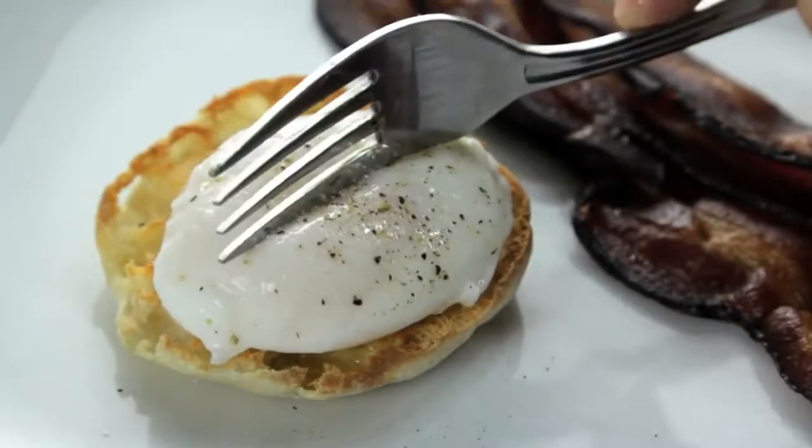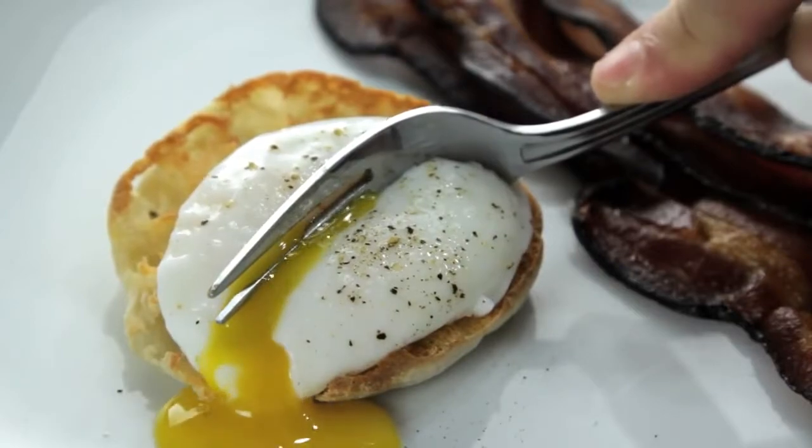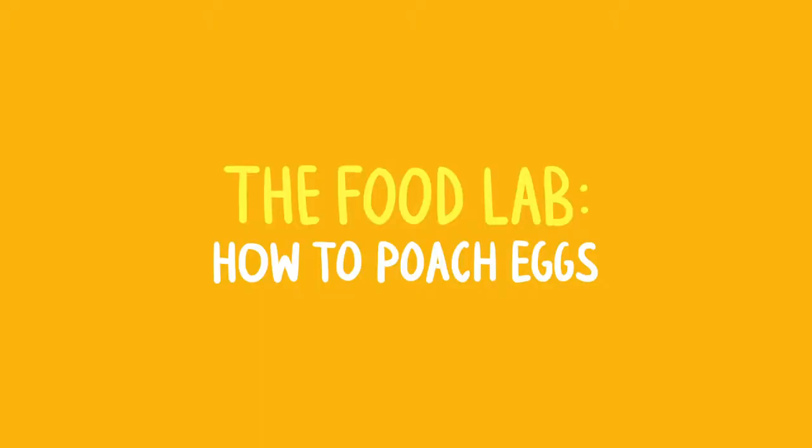The perfect poached egg. Tender whites around a warm liquid yolk that oozes out like gold when you cut into it. They're an essential part of Eggs Benedict. They can turn any salad into a meal or any vegetable into brunch.